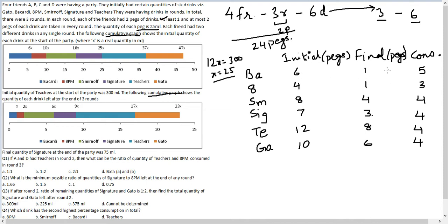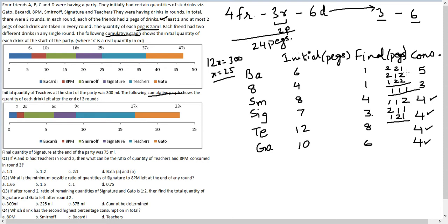The precise consumption for all individual drinks is now known. Bacardi was consumed 5 units, so the distribution could have been 2-2-1, or 2-1-2, or 1-2-2. 8PM can only get consumed in the manner 1-1-1, because in every round at least 1 peg of each drink is taken. For the drinks with 4 pegs consumed, the distribution can be 1-1-2, or 2-1-1, or 1-2-1. This applies identically to Smirnoff, Signature, Teachers, and Gate2.